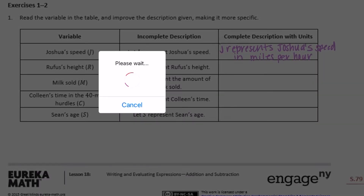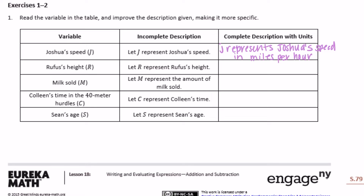The next one says Rufus's height r — let r represent Rufus's height. Are we measuring in centimeters, inches, feet, yards? Moving on to milk sold, let M represent the amount of milk sold. So are we talking about milk sold in pints, cups, gallons, ounces? I'm going to go with gallons because usually we buy milk in gallons. So M represents milk sold in gallons.